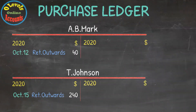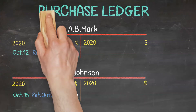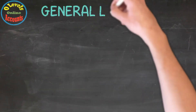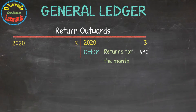Then we will make individual creditors' accounts called the Purchase Ledger. Finally, we prepare all ledgers and put all related entries in them. After that, we will prepare a Return Outwards account itself and put the total amount of Return Outwards in it — that is 670. This is called the General Ledger.